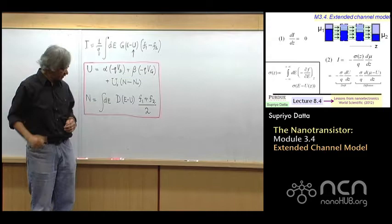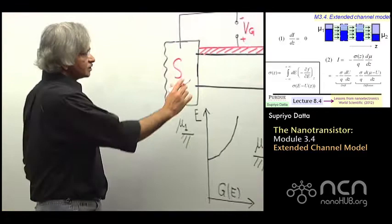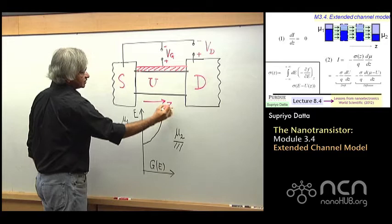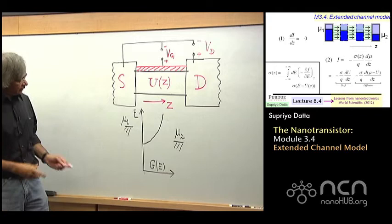So that potential is changing continuously. When you look at the channel, it's not like there is a single number that will describe the entire channel. It's more like you should view this as a continuous axis Z, and this is like U of Z.